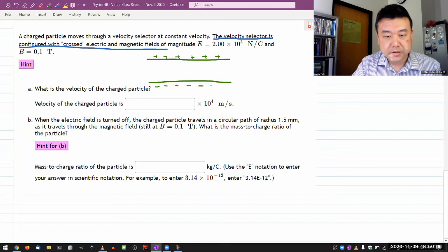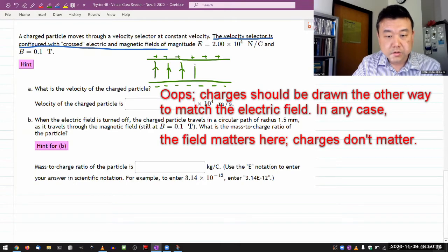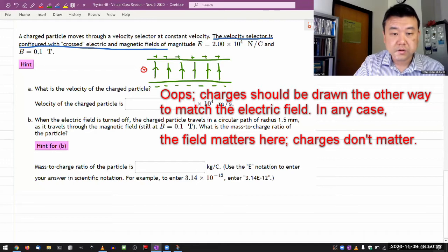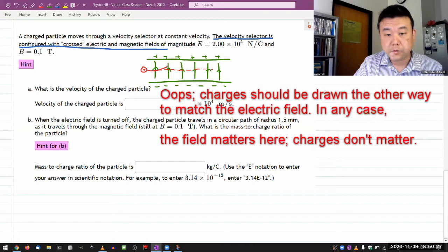What matters here is that through this arrangement, I have set up a region of uniform electric field. So if you imagine a positive charge moving through this region, as it enters the region, it would accelerate upward and it would hit the top plate here. That's the normal way it would go.